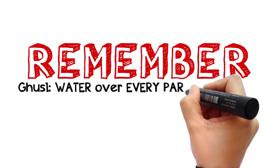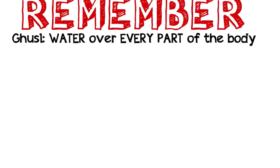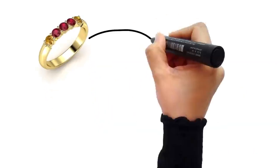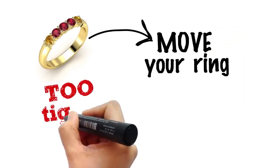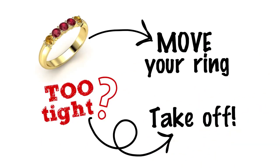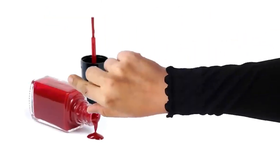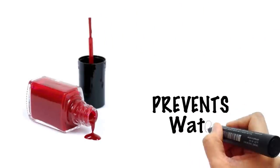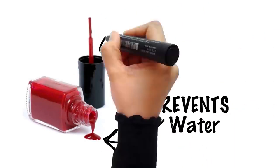Ghusl essentially means letting water run over every part of your body. So if you are wearing a ring, you should move it. And if it is so tight that the water won't reach the skin underneath, then you have to remove it. Cosmetic items which form a barrier and prevent the water from reaching your skin, you have to remove.